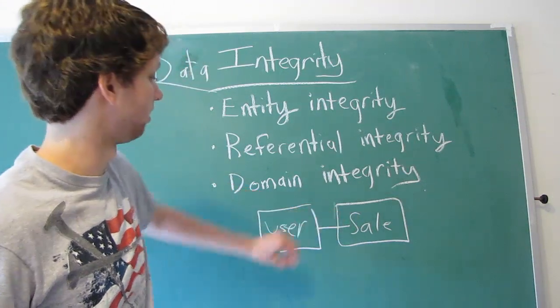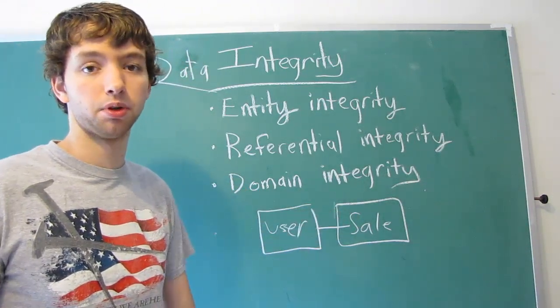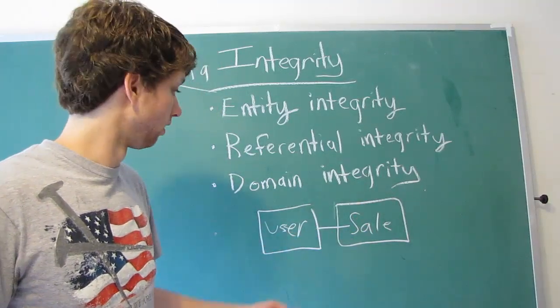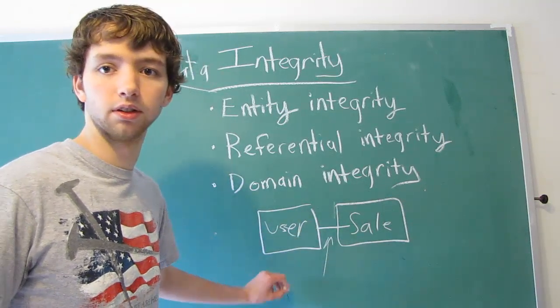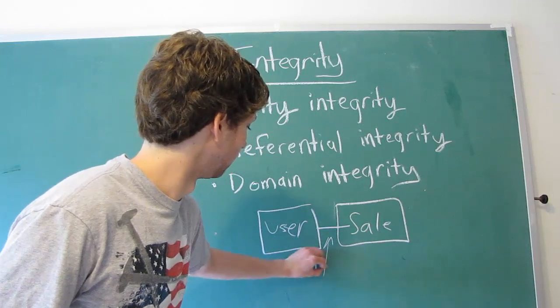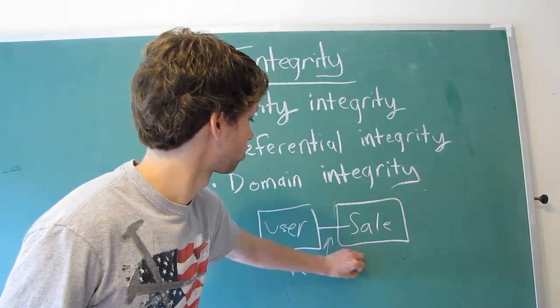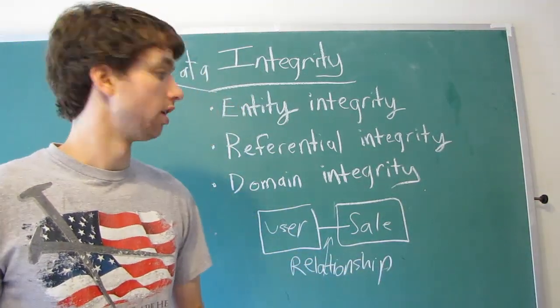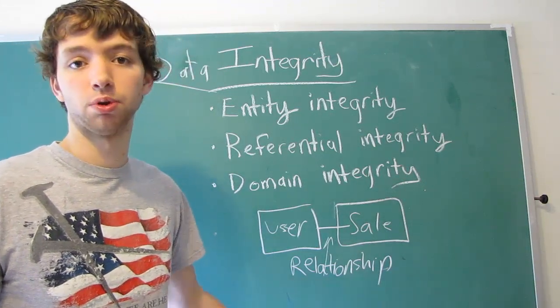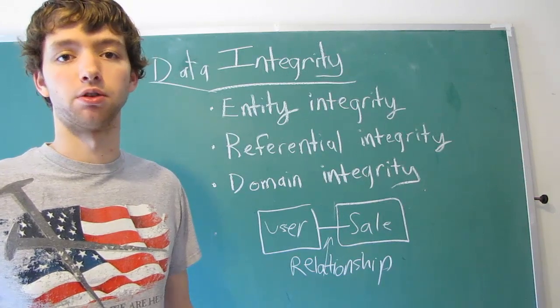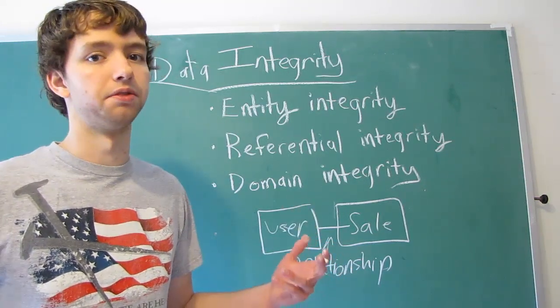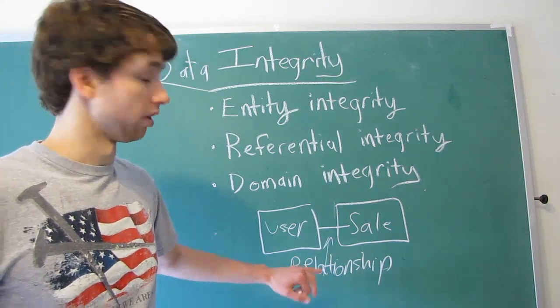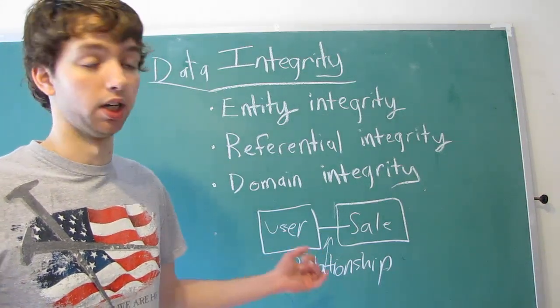That means the sale is dependent on a user, and we have a relationship. The user buys stuff. Stuff is bought by a user. This is known as a relationship. Now, do keep in mind that the term relational database does not come from the word relationship. It comes from relations, which is the mathematical connection of sets, which we talked about in an earlier video. But relational databases do have relationships between tables.